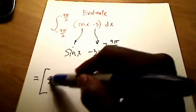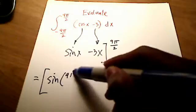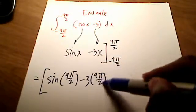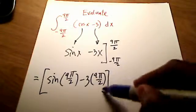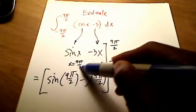I've got the sine of 9π over 2 minus 3 times 9π over 2. All right, that's where everywhere I see an x, I'm plugging in a 9π over 2.